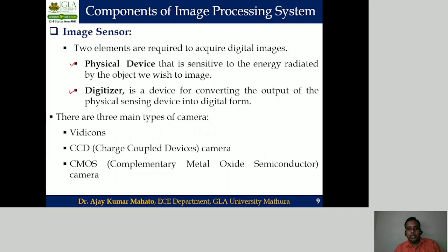In image sensor systems, three types of cameras are widely used in digital image processing systems: the Vidicon, the CCD camera, and the CMOS camera. References for all three types of cameras will be provided in the description section.